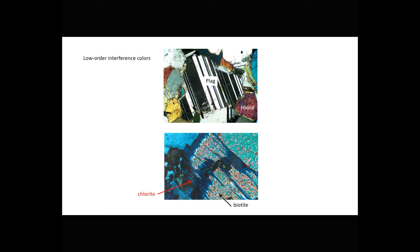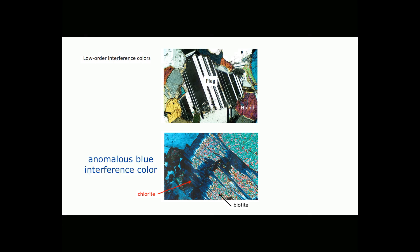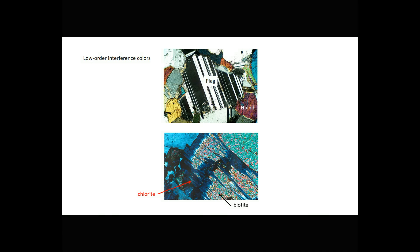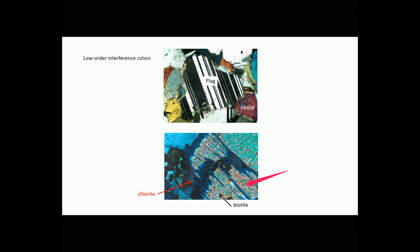Some minerals — and chlorite is a great example — display what we call anomalous interference colors. We call them anomalous because they don't show up on the normal interference color chart. Anomalous interference colors are caused by two things most of the time: either the mineral has very low birefringence, which can give very strange interference colors, or the mineral is naturally colored and the strong natural color of the mineral masks the interference colors. In the bottom view, there's biotite with a middle- to upper-order interference color pattern, which is altering to an inky blue chlorite — the biotite was turning into a low-temperature mineral but the reaction never went to completion.